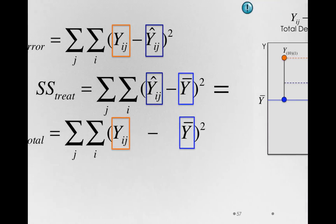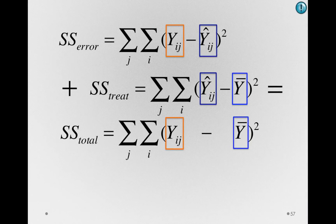This is why, when we go to those sums of squares, the sums of squares for error add with the sums of squares for treatment to equal the total sums of squares in our data. Every person has one part error deviation and one part treatment deviation.